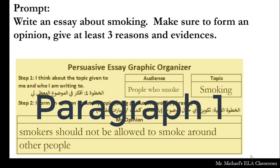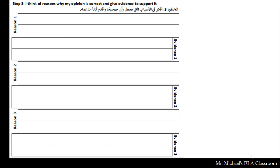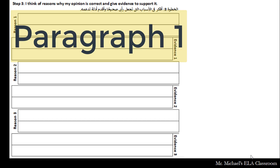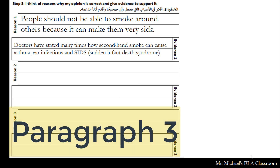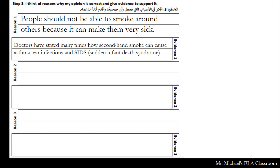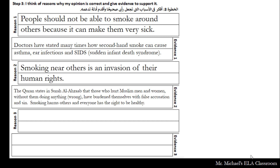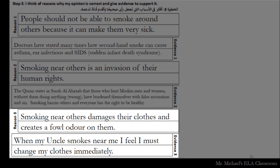Although you could probably give reasons for smoking being banned. The next thing you're going to do is write down your reasons and your evidences. Make sure when you write your reasons, your evidences are in proof of those reasons. Most of your evidence will be anecdotal, which means you're not going to research it on a computer — it's going to be something from your own life. Some evidence will be more research-based, but anecdotal means you take something from your own life to give proof for your reasons. For example: smoking near others damages their clothes and creates a foul odor on them — so when my uncle smokes near me, I feel I must change my clothes immediately.